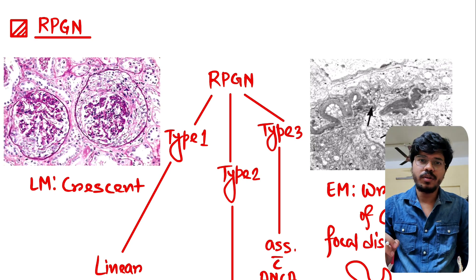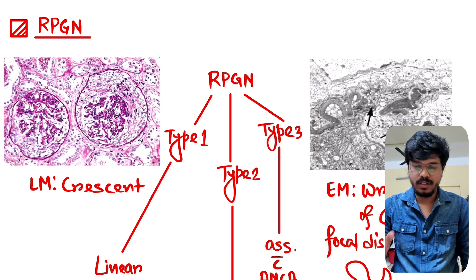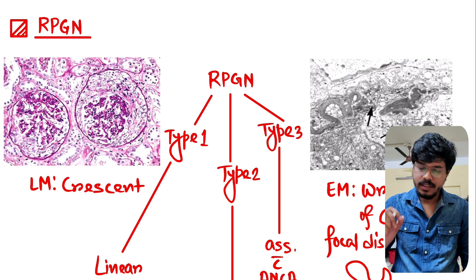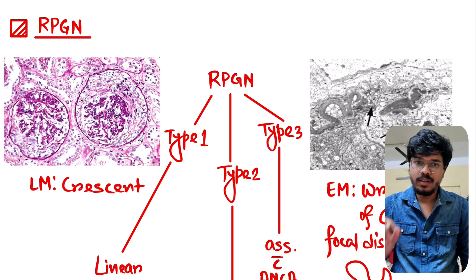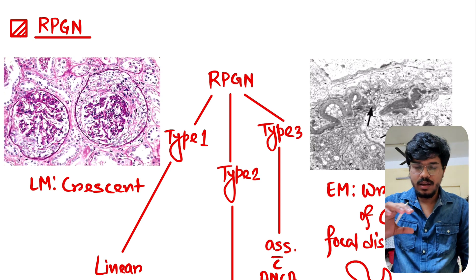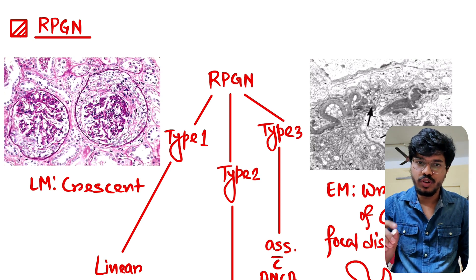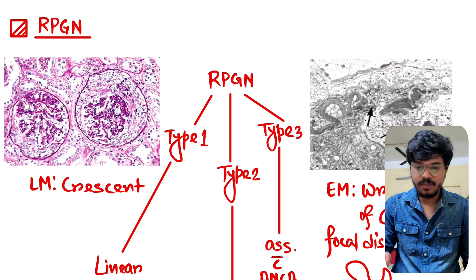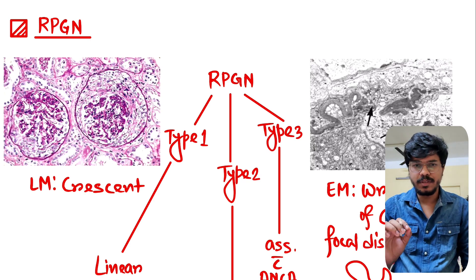Today's topic is RPGN — Rapidly Progressive Glomerulonephritis. It is an acute nephritic syndrome in which more than 50% of glomeruli show crescent formation, which is why it is also called crescentic disease.